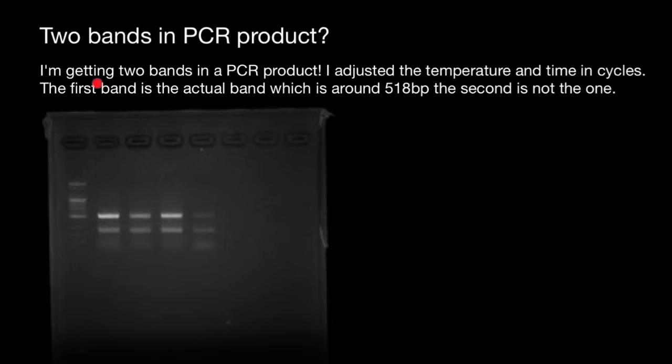So here's a question: I am getting two bands in a PCR product. I adjusted the temperature and time in cycles. The first band is the actual band, which is around 518 base pairs. The second is not the one. So what is the reason?